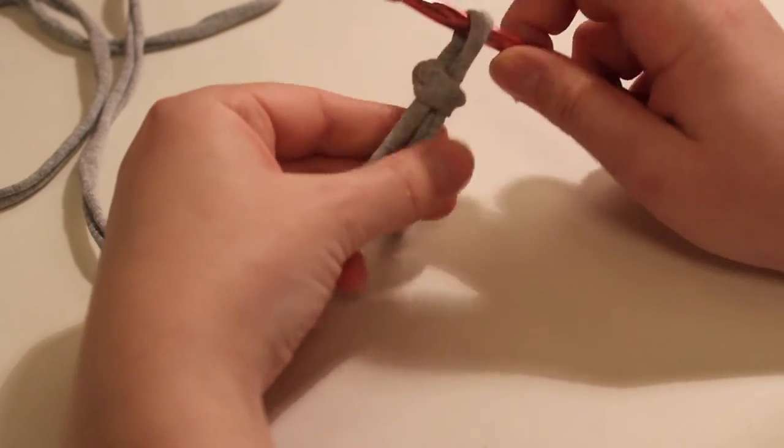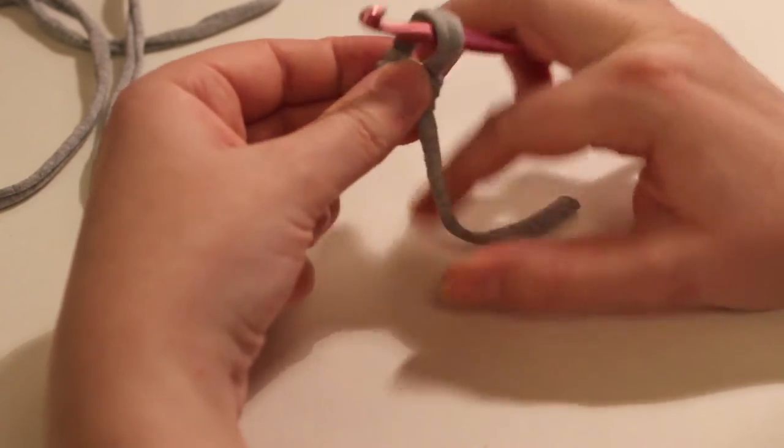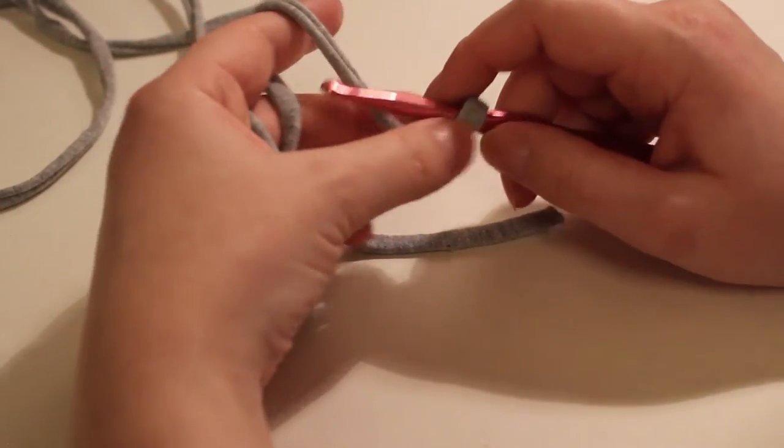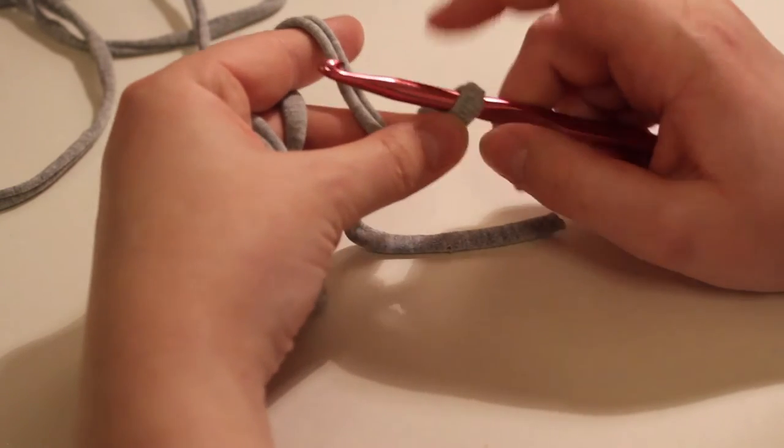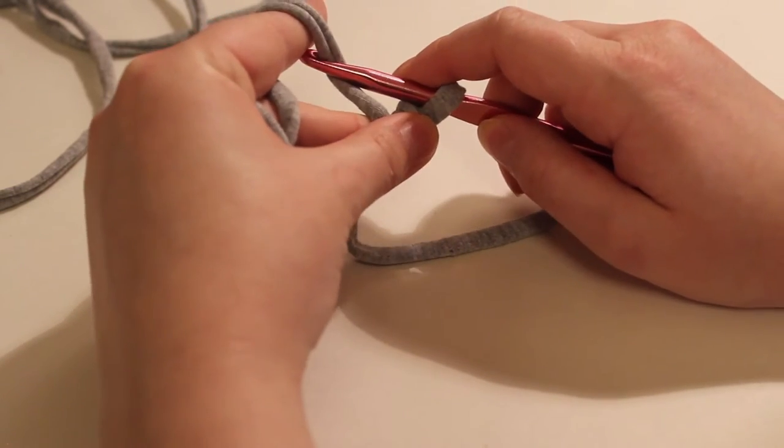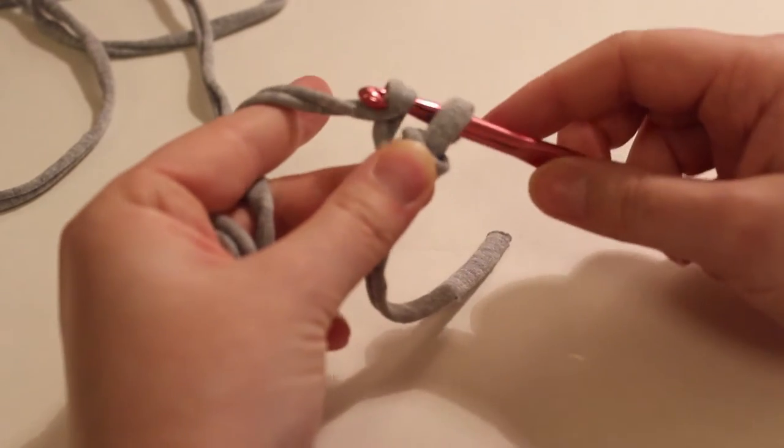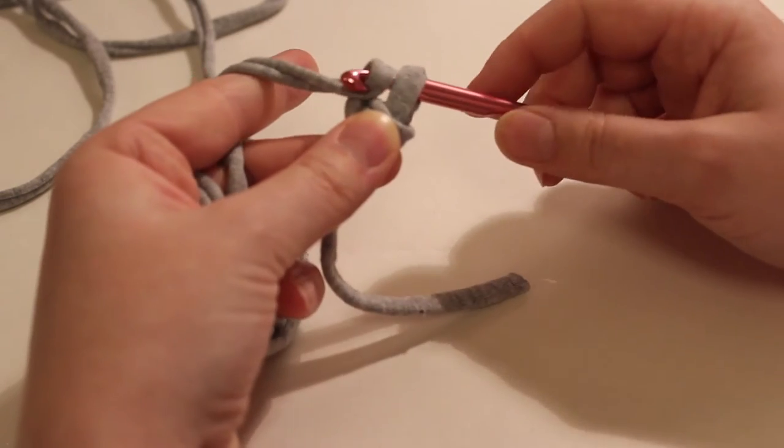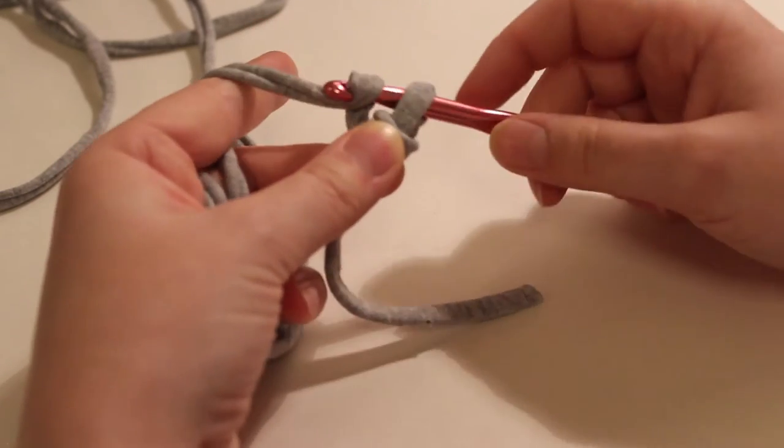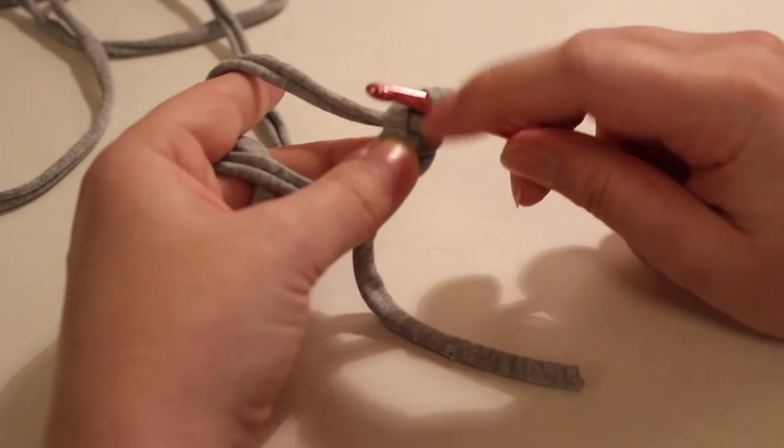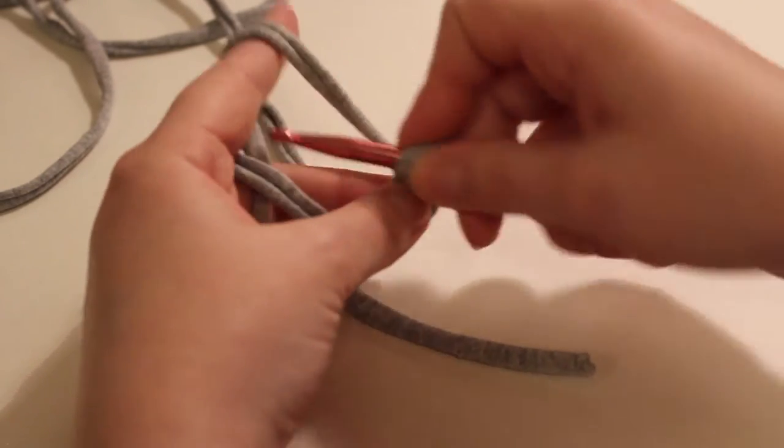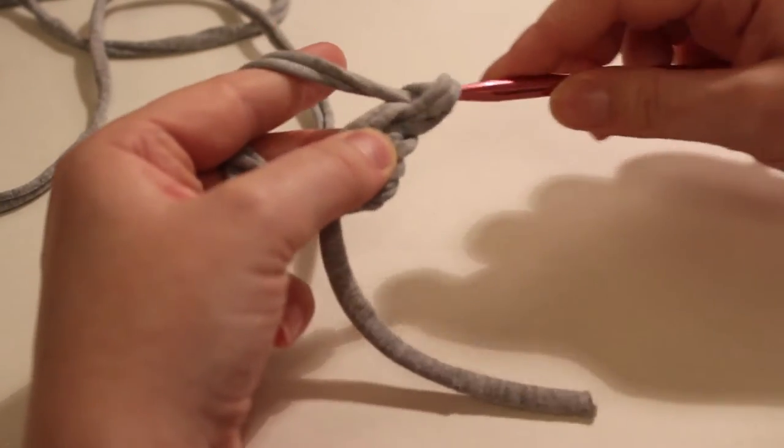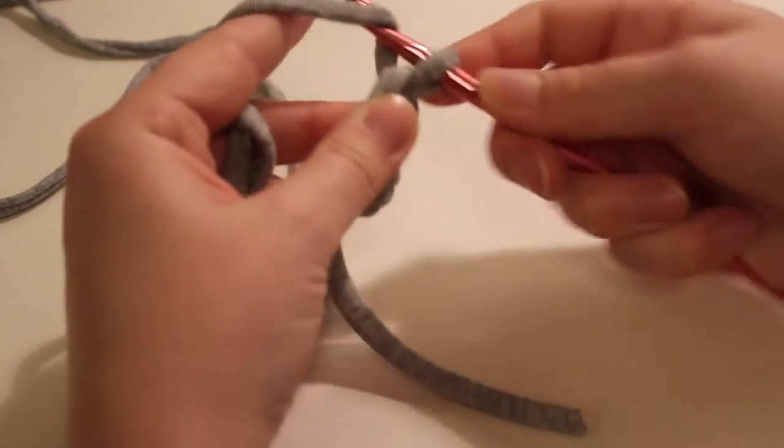So now you can adjust it by pulling on this tail. Now we're going to chain—I think it's 40—but I'm not going to chain 40 with you because that's going to be a lot in this very big yarn. So I'm just going to chain a couple. To chain, you yarn over and then you pull through the loop that is already on your hook. So yarn over, pull through, and you're just going to continue.